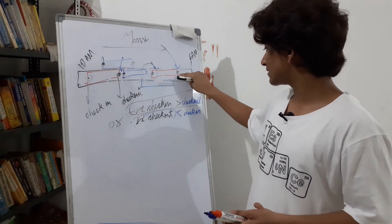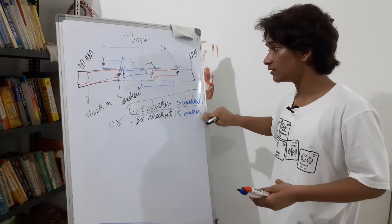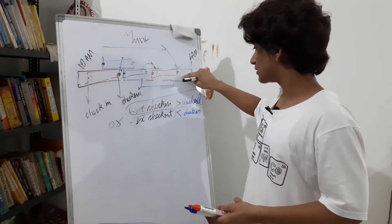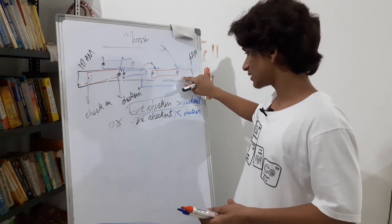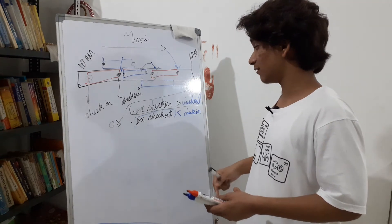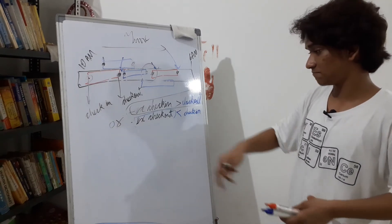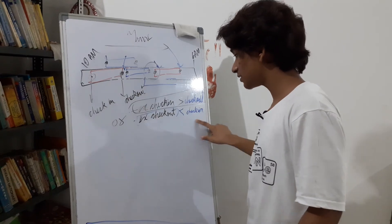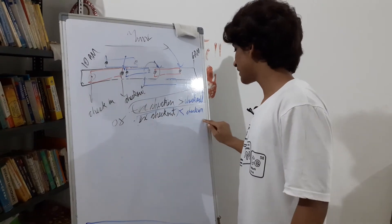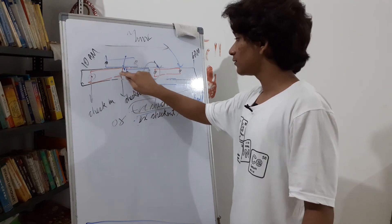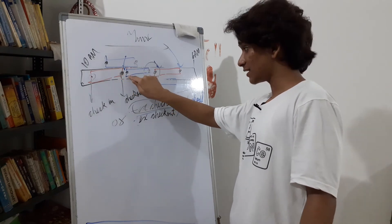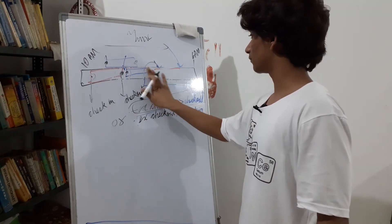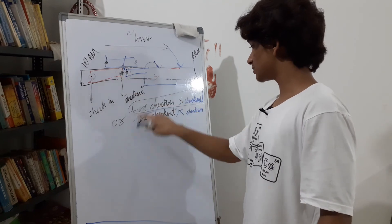If the first condition is satisfied — existing check-in is greater than the new check-out — the second condition (existing check-out < new check-in) cannot also be satisfied, because the existing check-out is to the left of the new check-in on the timeline. In a similar manner, if you take the other pair, the second condition satisfies — existing check-out < new check-in — since it's on the left.